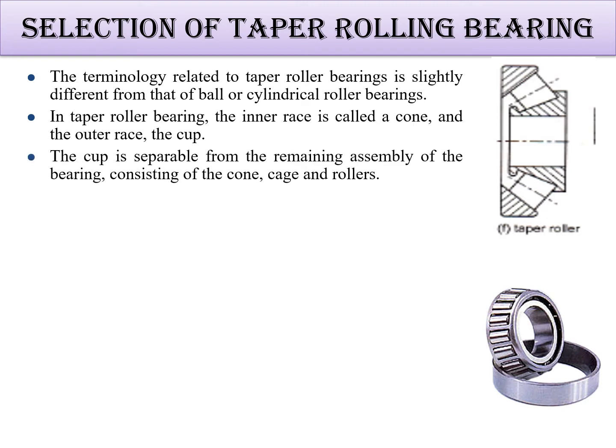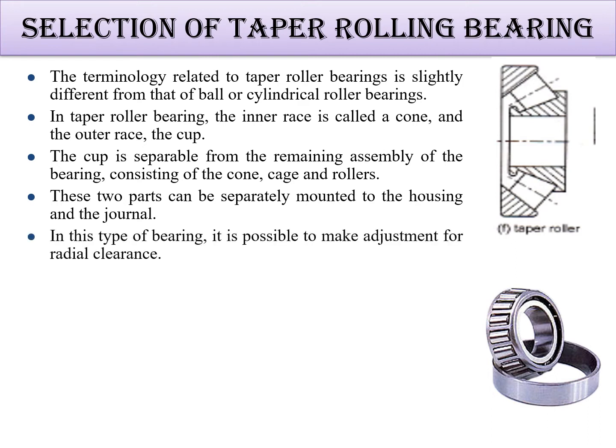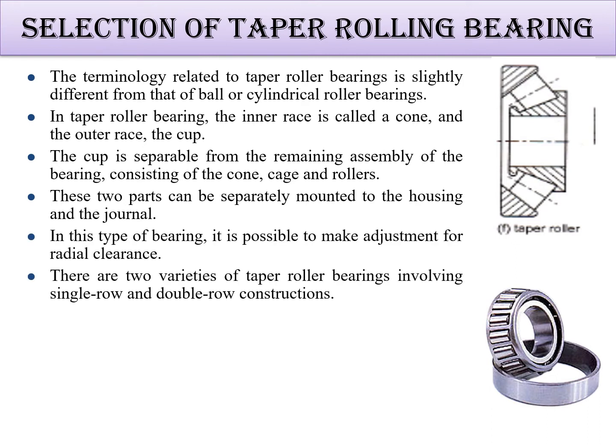The assembly can be done at any time and both parts can be separately mounted on the housing and the journal. In this type of bearing, it is possible to make adjustments for radial clearance as well.